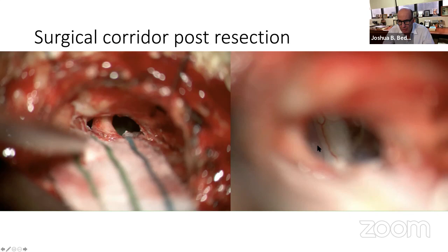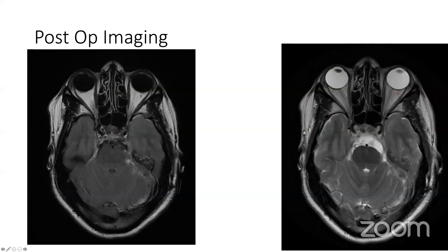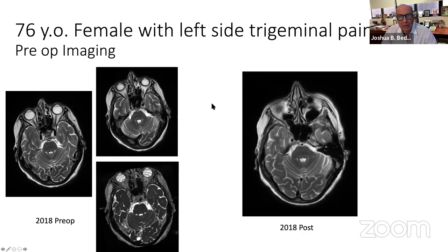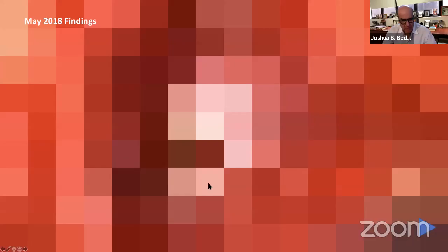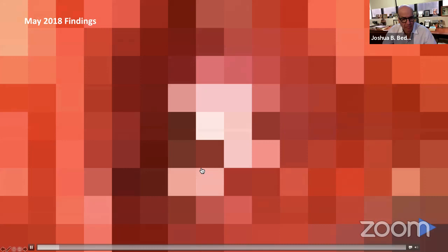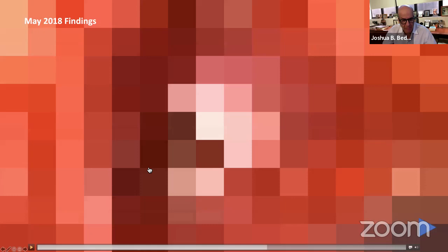Next case: a 76-year-old female with MS and trigeminal neuralgia. In her 2018 operation, the preoperative study is on the left. At surgery you can see branches of the superior cerebellar artery, evidence of thinning, and the nerve bouncing back and forth. The postoperative findings showed improvement, but now she presents with a recurrence of pain. You can see the sponge in its location.